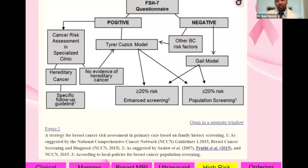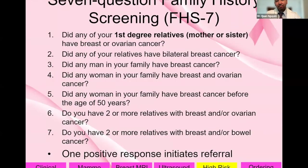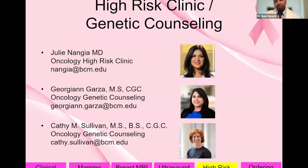You can start with a short seven-question questionnaire, which provides a flowchart for what to do with the answers. Primary care providers should ask these questions, and if there is even one positive response, they should refer the patient to a high-risk genetic counselor so that appropriate screening studies — mammogram and breast MRI — can be ordered. At Baylor College of Medicine, this is handled by our high-risk genetics clinic team.